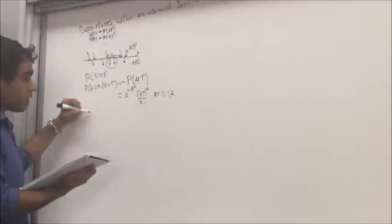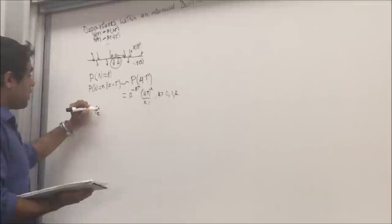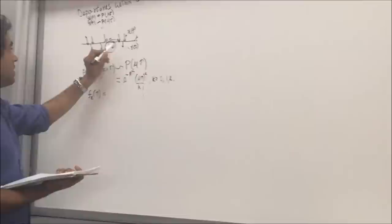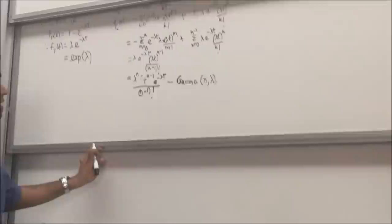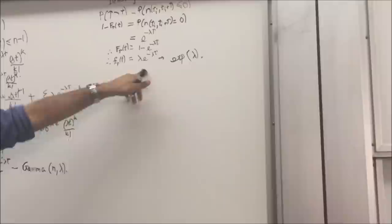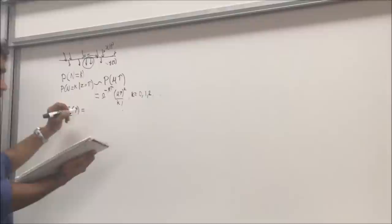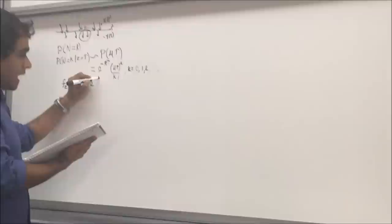We also know that the density function f_Z(tau), which is the inter-arrival density function, will equal the exponential density function. So f_Z(tau) equals lambda times e raised to minus lambda*tau, where tau is greater than or equal to 0.